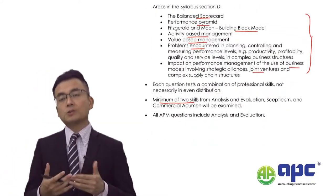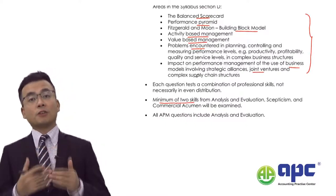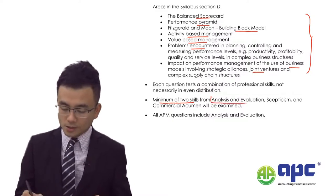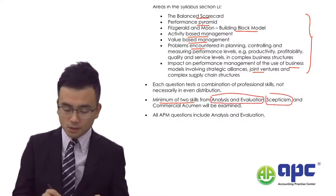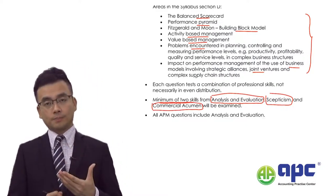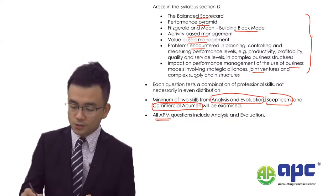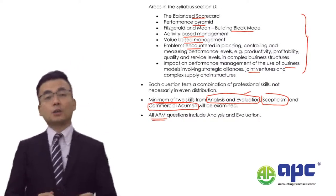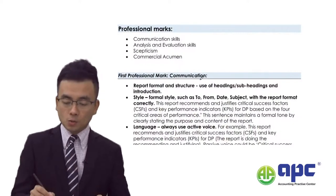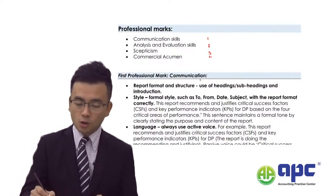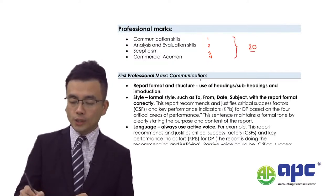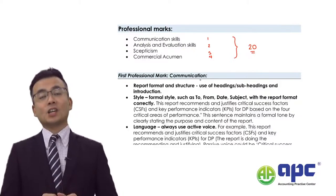The professional skills marks will be quite subjective. They include analysis and evaluation, scepticism, commercial acumen, and communication skills. There will be four professional skill areas, and these marks will total 20 across the entire APM paper.